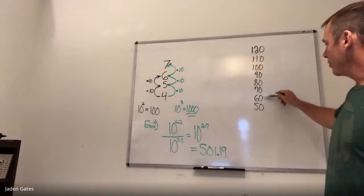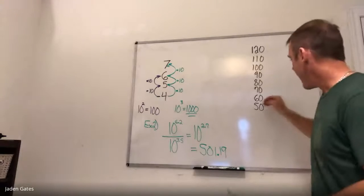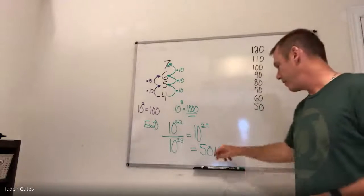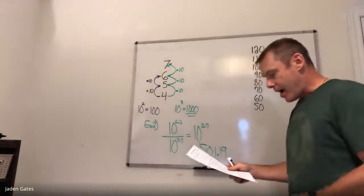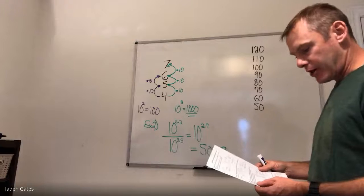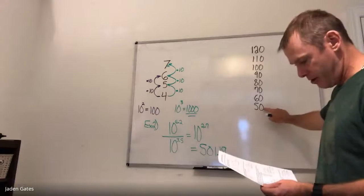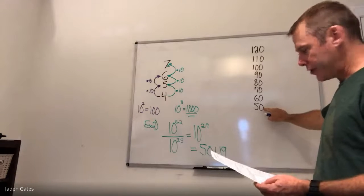The decibel scale goes up by 10s. Same idea though. Each time you go up by 10, you're going up by a multiple of 10. Because again, it's a logarithmic scale. And so in example three, how many times louder is an ordinary conversation, which is 50 decibels here, than whispering, which has 20 decibels.